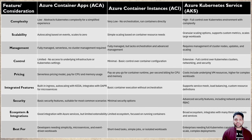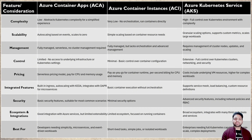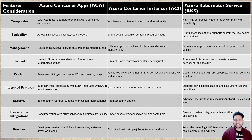In short, if you're running a very basic or event-driven application, ACI is recommended. If you're running containers across multiple platforms — like different clouds or on-premises — or running very complex enterprise-level applications where service mesh and load balancing between containers are required, then AKS is recommended.